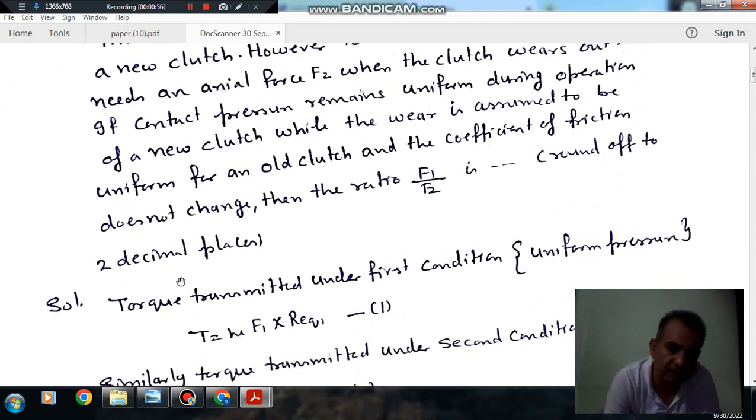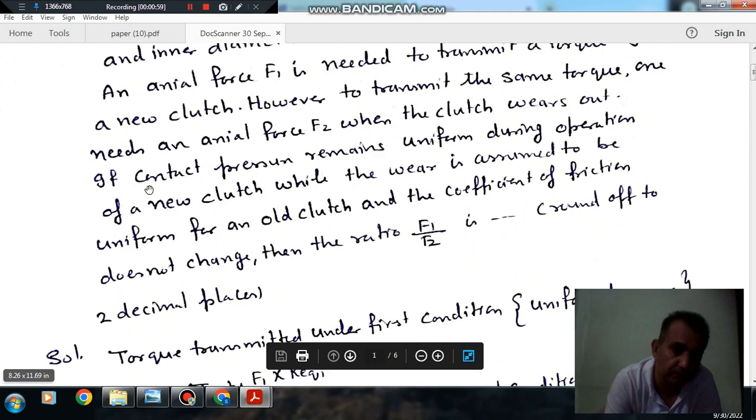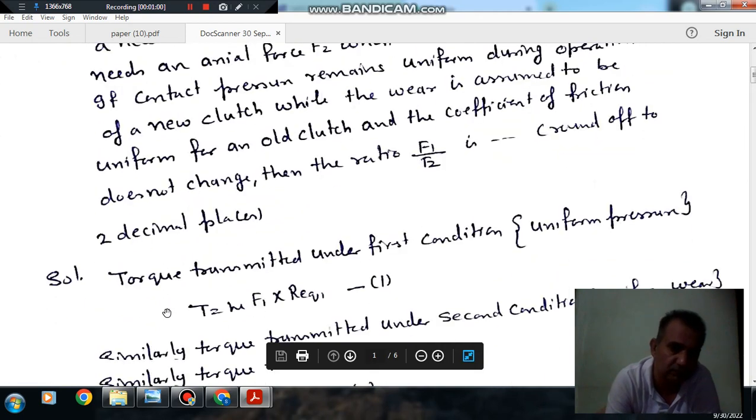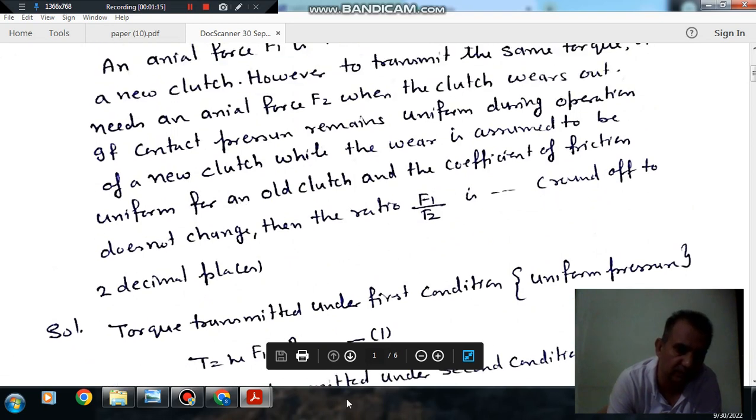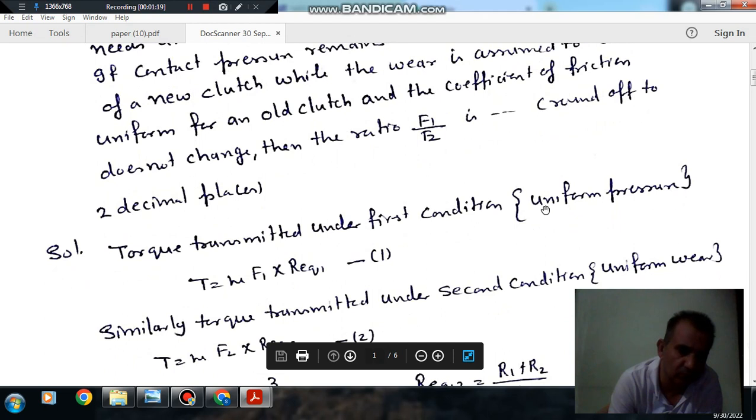First, taking the new clutch where pressure is uniform. The torque is given by μ F1 into R_eq1. R_eq1 is the radius according to uniform pressure theory, and F1 is the force required to engage clutch while the clutch is new.